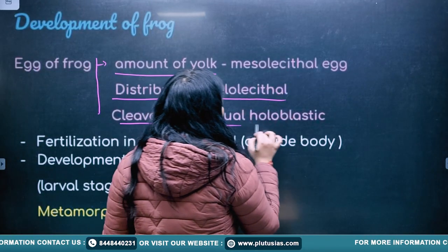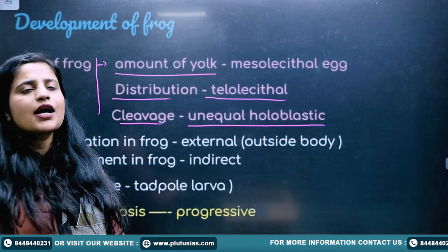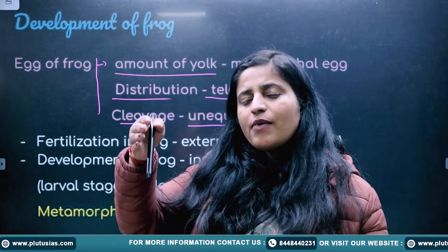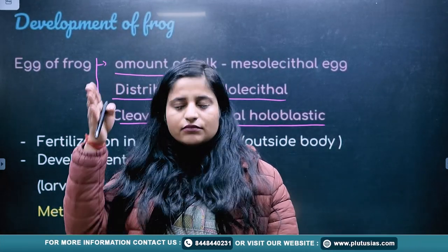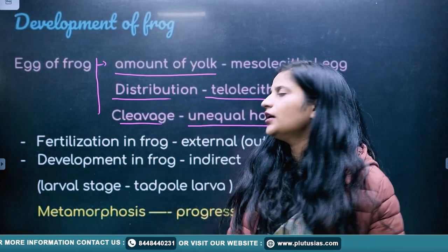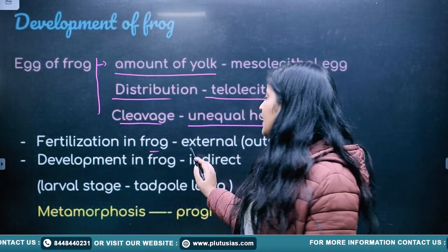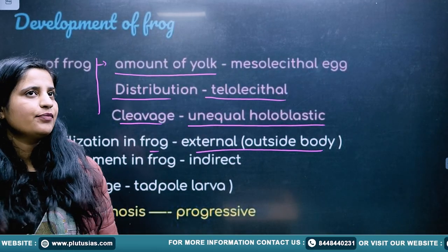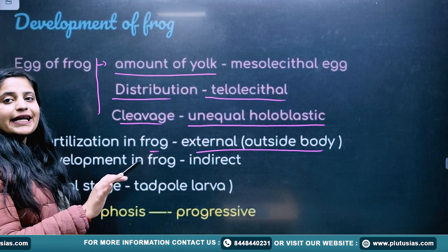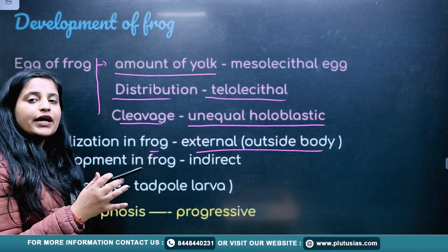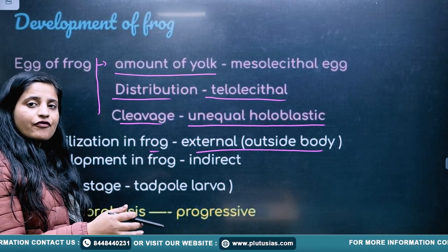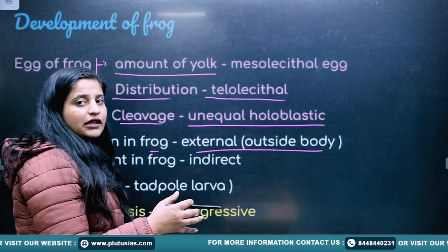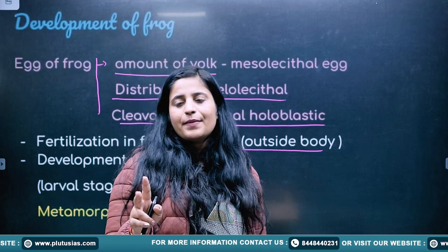Cleavage is unequal holoblastic. Unequal means the divisions are not equal. Holoblastic means the cleavage cuts through the entire cell. Fertilization is external — it takes place outside the body. The development in frog is indirect, meaning a larval stage is involved.